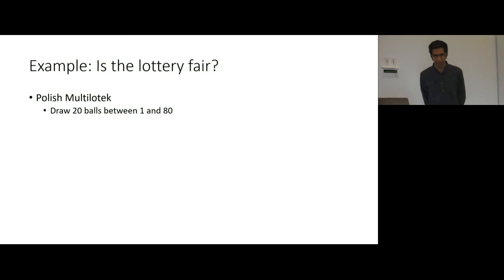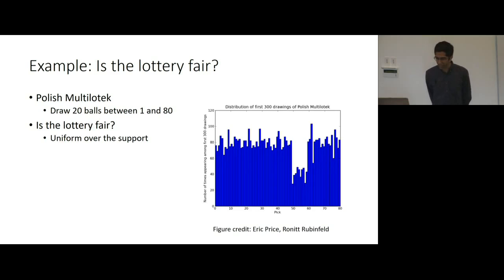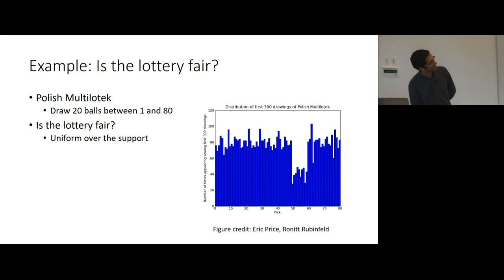Let's try to make it more concrete with a non-scientific example: is the lottery fair? I want to use the example of the Polish Multi-Latech, a lottery that ran in Poland in the 90s. It drew 20 balls between the numbers 1 and 80, and the question is: is this lottery fair? By fair we mean it should have equal chance of drawing each ball - is the distribution uniform over the balls? You can see in this image the result of the first 300 drawings. You might speculate it may not be quite a fair lottery. But how do you really know formally?